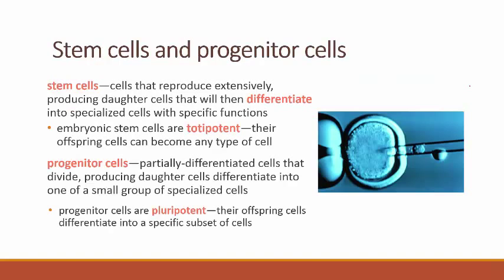You've probably heard of stem cells — they have been all the rage in the news. Stem cells are cells that can reproduce extensively, and they are what we think of as undifferentiated cells. They still have access to a large amount of the DNA and can produce cells that will differentiate into different kinds of cells in the body. Stem cells are thought of as unspecialized cells because they haven't been fully differentiated.